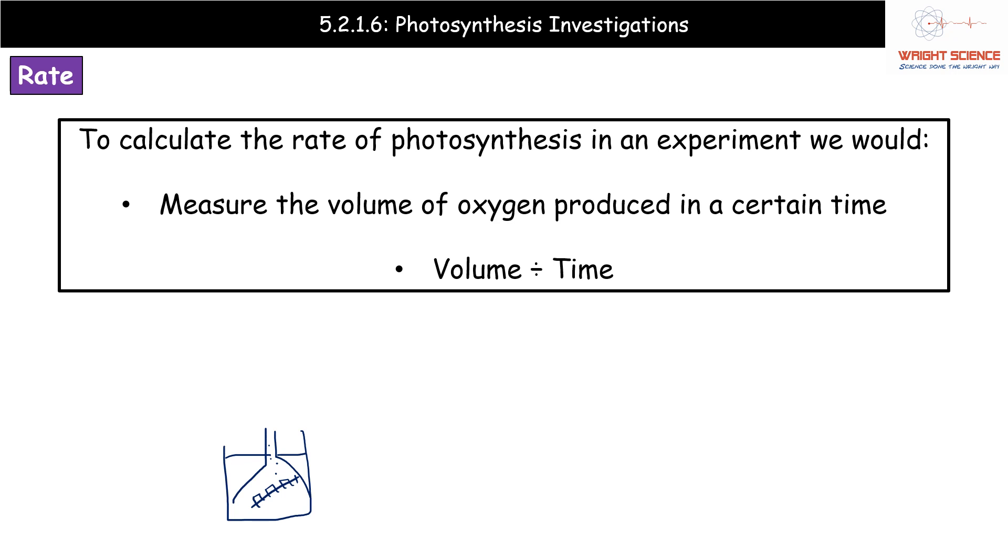You may have upgraded that slightly by having a little upturned measuring cylinder over the top to collect the gas. What we were obtaining there was a volume of oxygen in a certain time. So we'd have a volume, we'd have a time, and volume divided by time gives us the rate.